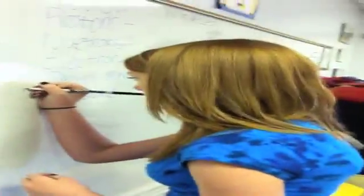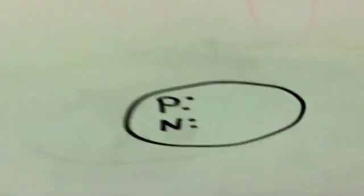Emily's going to show us how to create a Bohr model. First, you're going to write P and N. This stands for protons and neutrons. The circle around it indicates the nucleus.